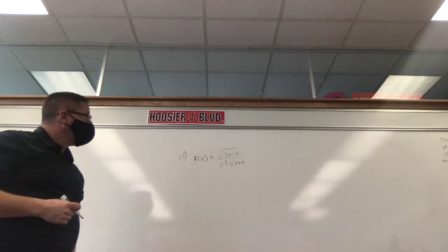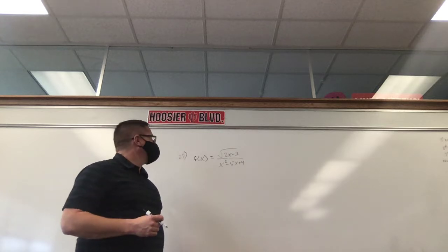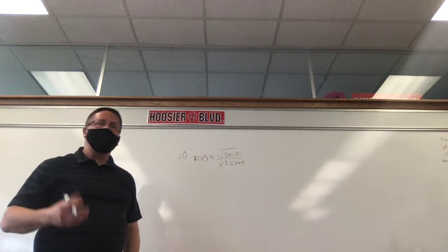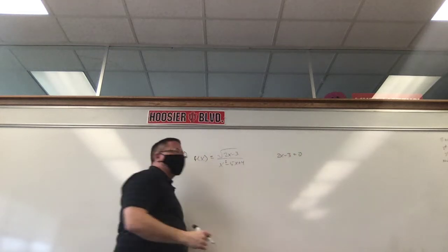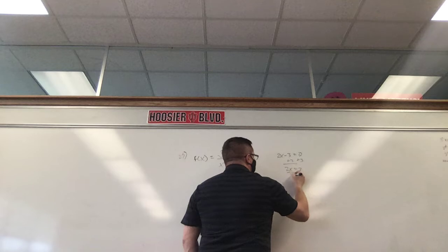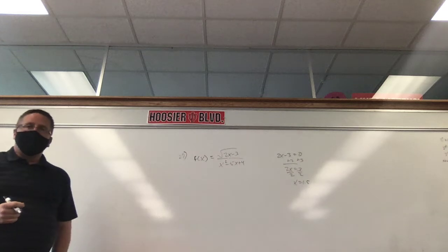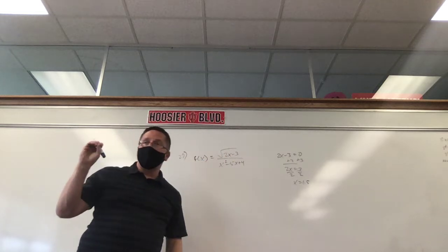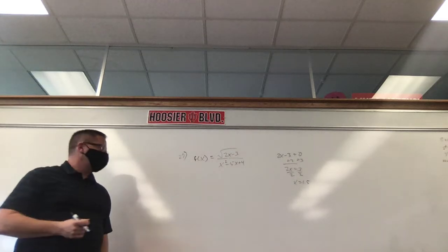Can I plug in negative five? No. Let's find out what makes zero on top. Set 2x minus 3 equal to zero and solve — we add three, so 2x equals 3, x equals 1.5. Can I plug in 1.5? Two times 1.5 is 3, three minus three is zero. Can I take the square root of zero? Sure — the square root of zero is zero, because zero times zero is zero. So I can plug in 1.5.